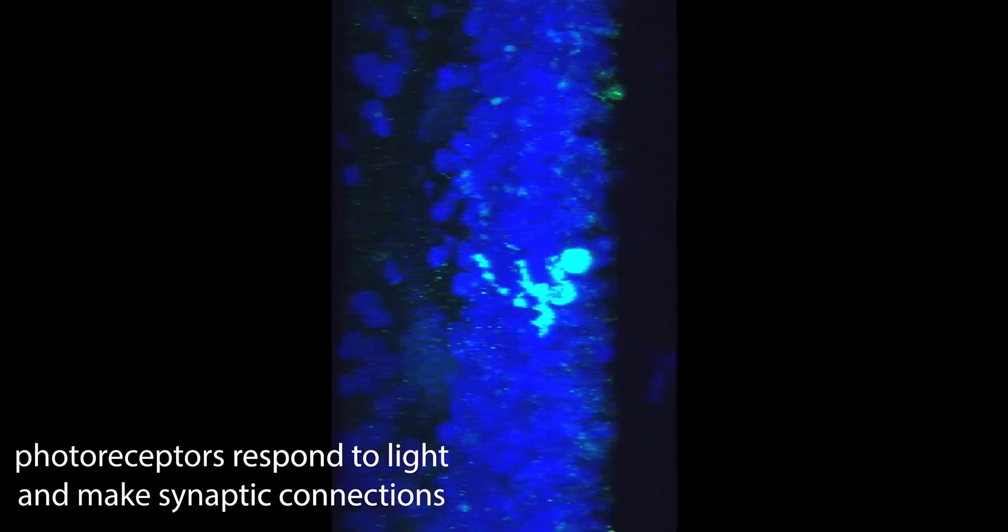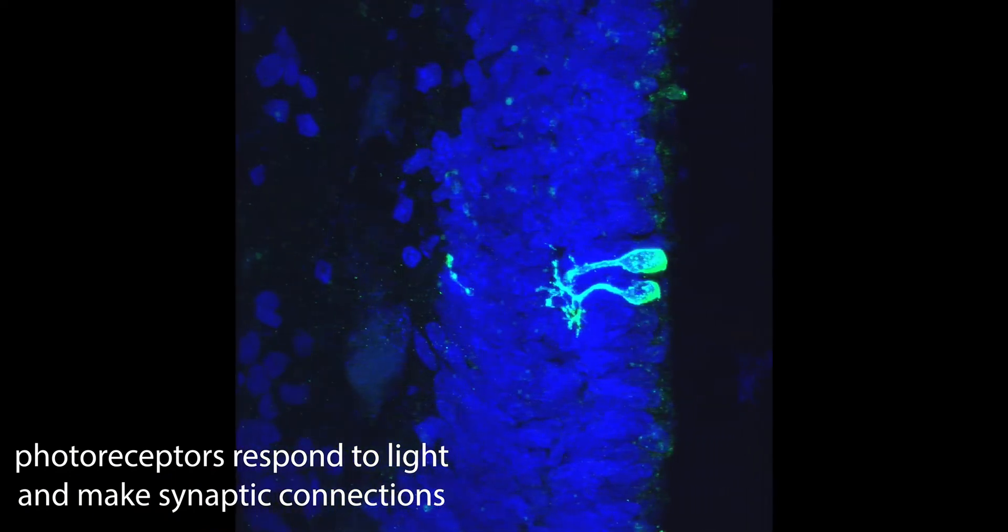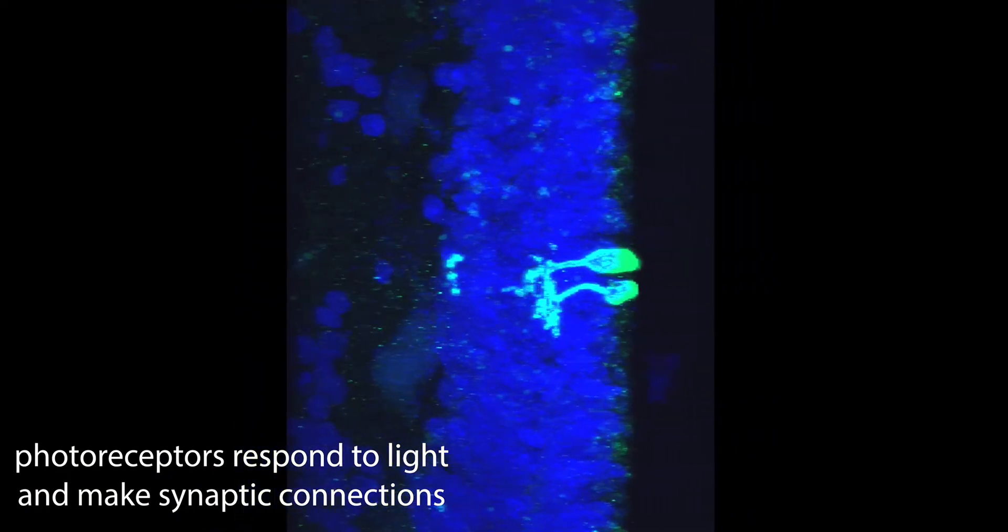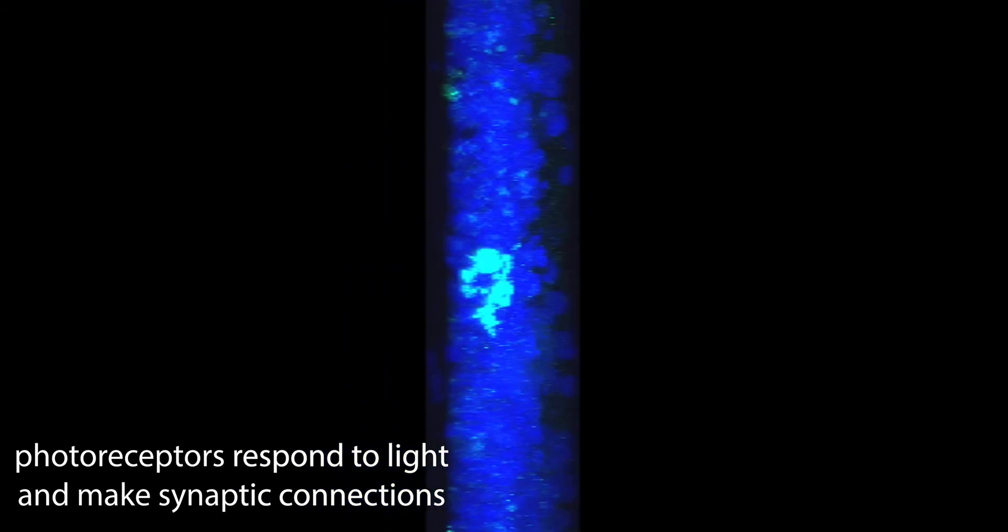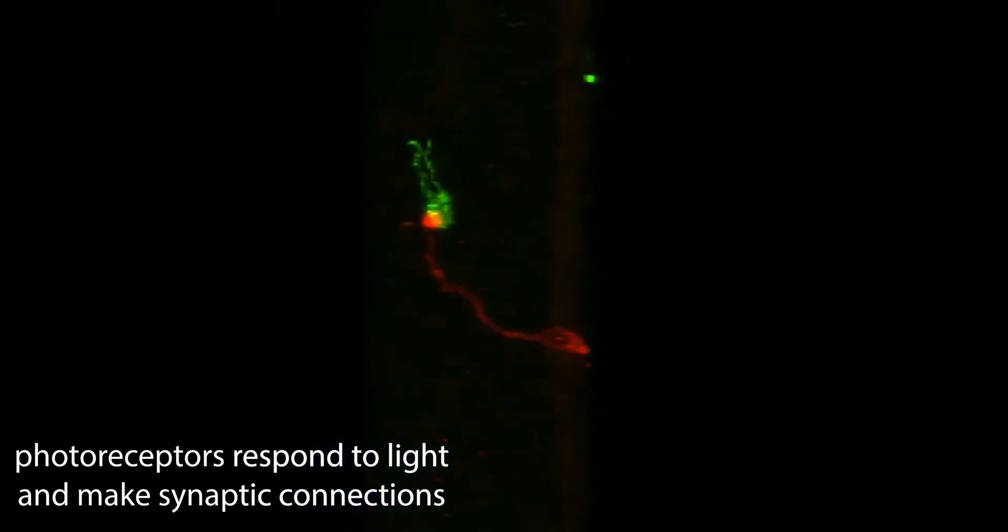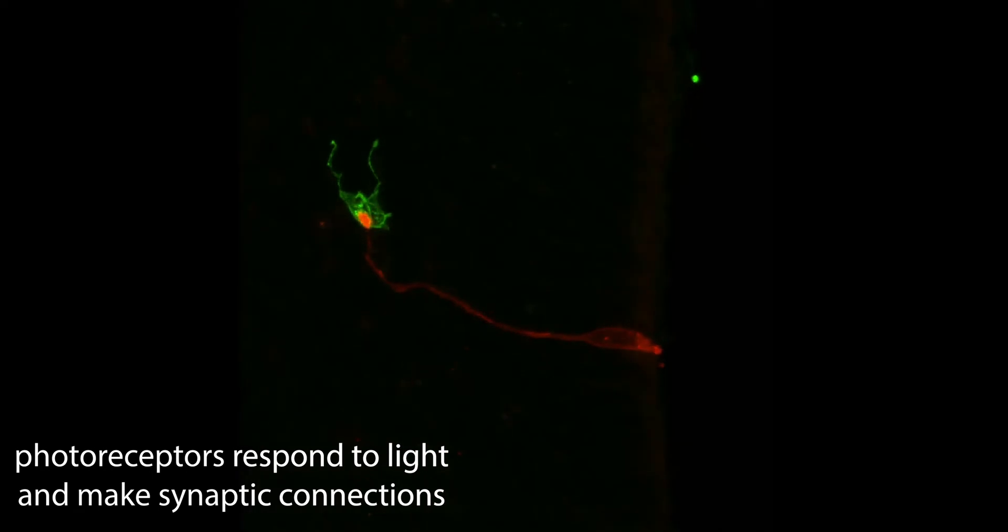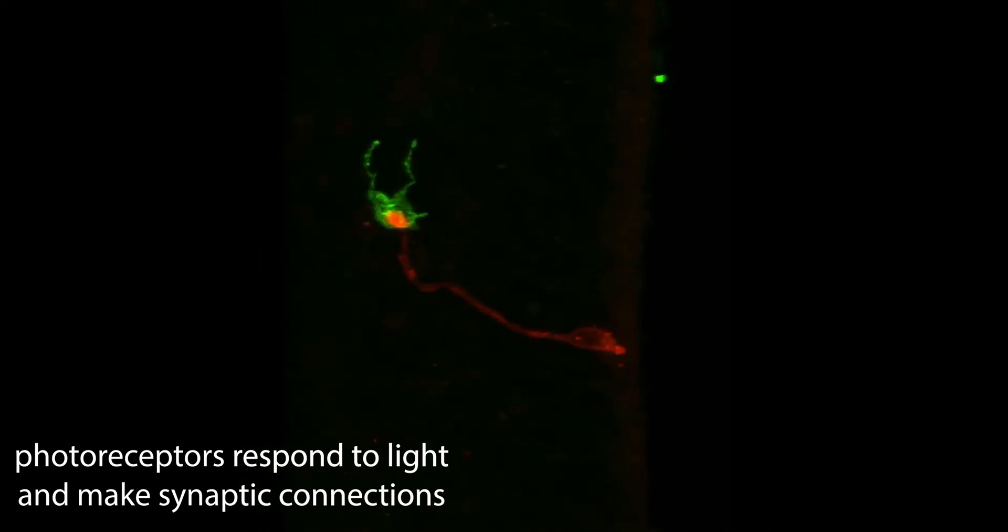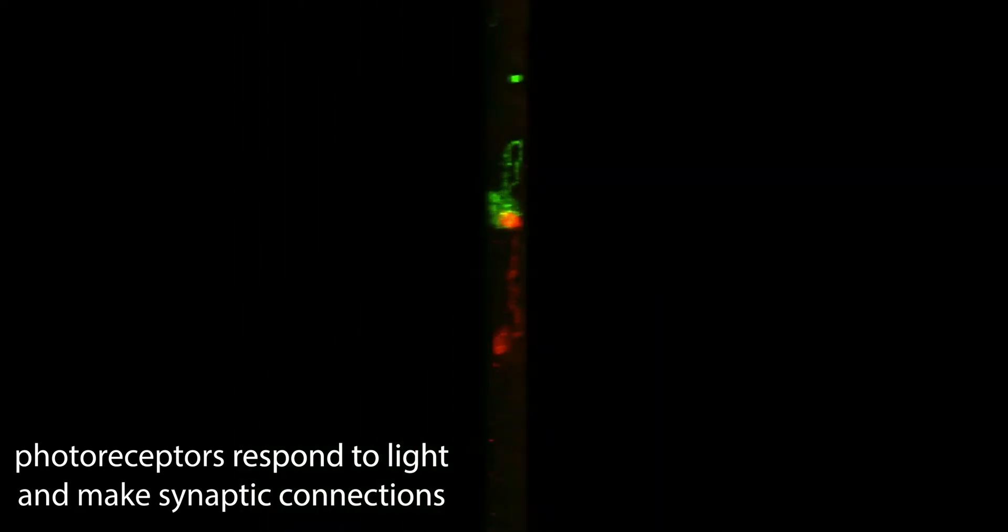they are able to establish synaptic communications with other cells in the retinal organoids and transmit the information of that light response to other cells, mimicking the functional circuitry that is found in the native human retina.